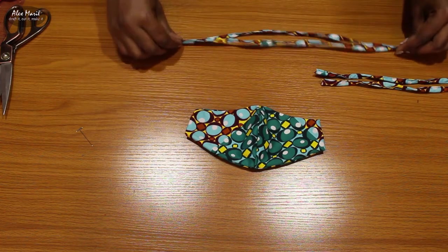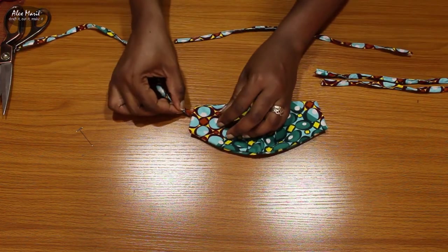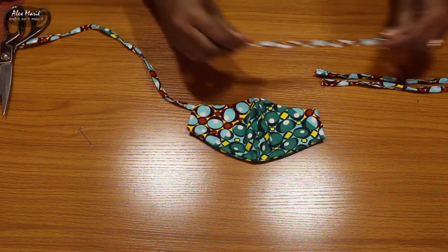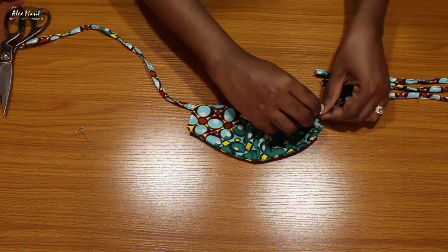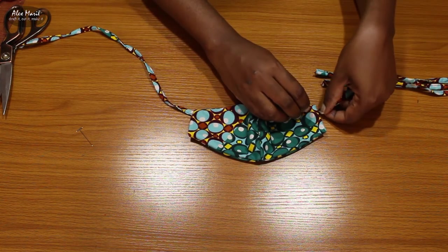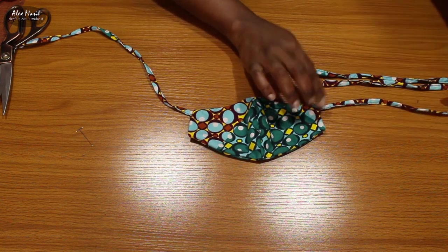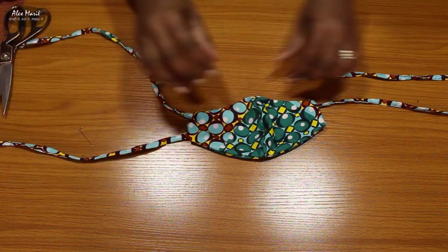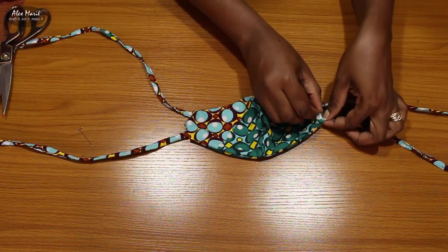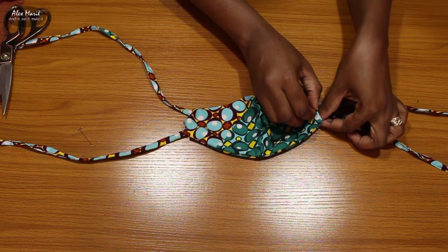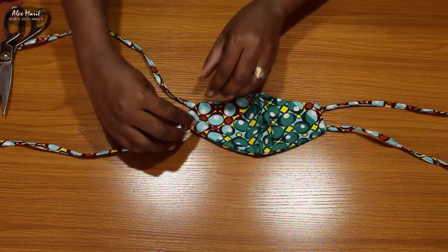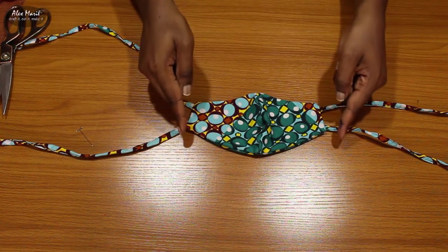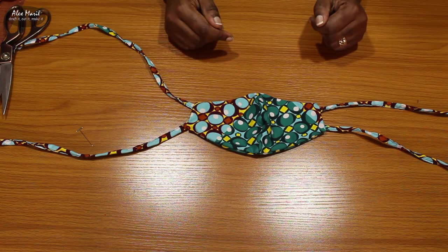And then for the straps, I'm going to take the two longer ones. I'm just going to put them in about half an inch here. I'm just going to sew straight down on both sides and that should be the end of your mask.